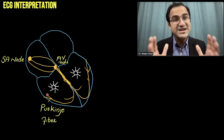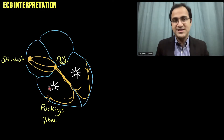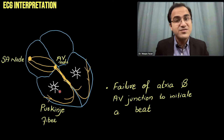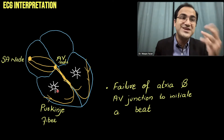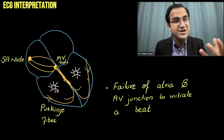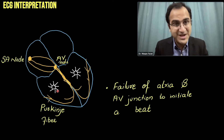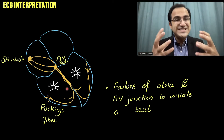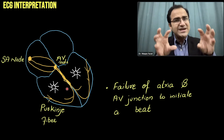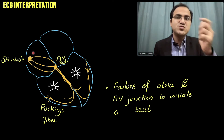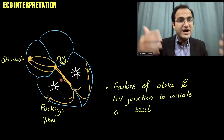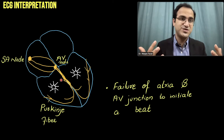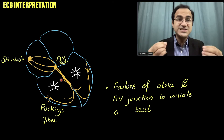When the ventricles take charge of the electrical activity, things go wrong in the heart. Failure of the atria and AV junction to initiate a beat results in electrical rhythms being generated from the ventricles — those rhythms are called ventricular rhythms. They include ventricular tachycardia, ventricular fibrillation, polymorphic ventricular tachycardia, and premature ventricular complexes. These situations can be very lethal for the patient.